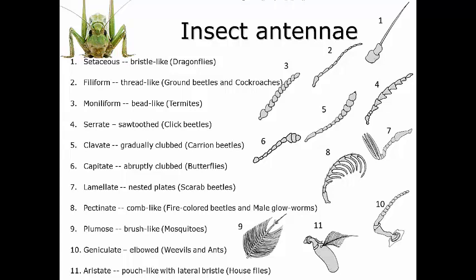The third type is moniliform — they look like a string of beads, found most commonly in termites. The fourth is serrate — these look a little like a saw, with saw-toothed lumps along the antennae. Certain types of click beetles have serrate antennae.